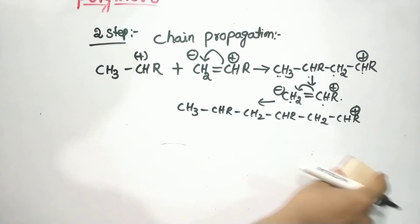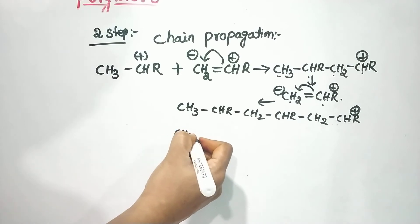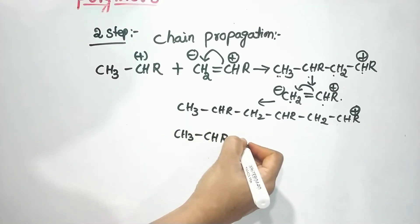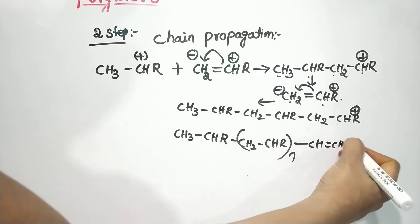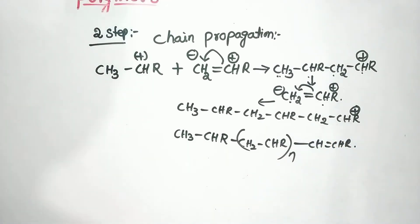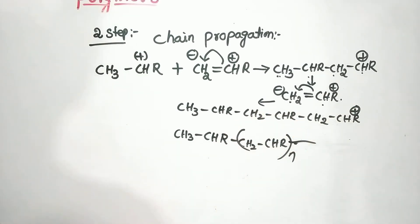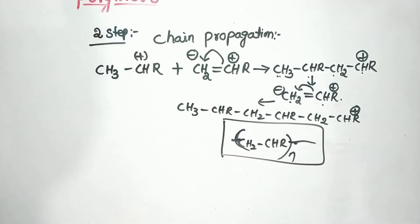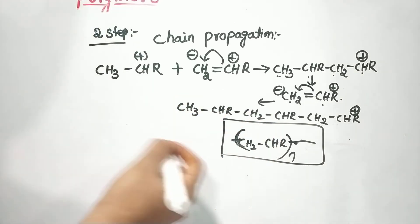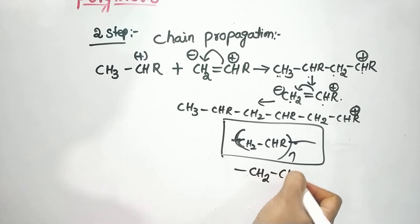Each time a monomer adds, the chain extends: CH₃–CHR–CH₂–CHR taken n times, giving CH₂CH⁺R at the growing end. This is a polymer chain that repeats. The repeat unit is –CH₂CHR– repeated n times. For example, with polyethylene we get –CH₂CH₂– repeated n times.